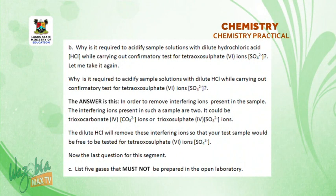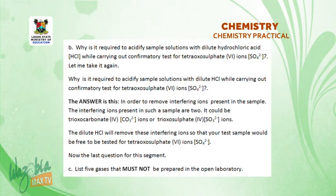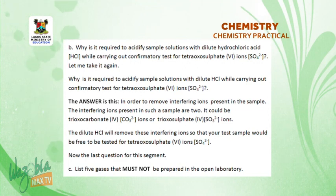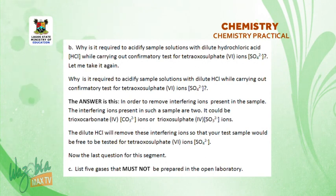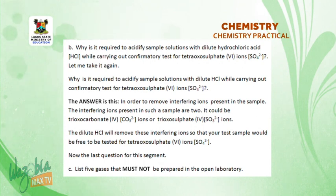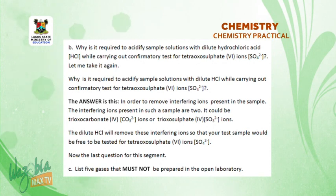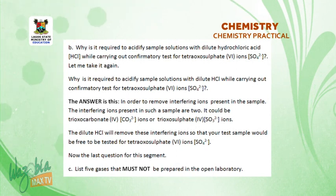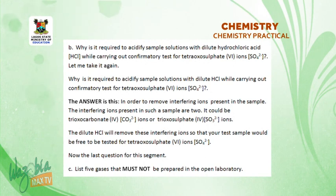Why is it required to acidify sample solutions with dilute hydrochloric acid while carrying out confirmatory tests for tetraoxosulfate(VI) ions? The answer is: in order to remove interfering ions present in the sample. The interfering ions present in such a sample could be trioxocarbonate(IV) ions or trioxosulfate(IV) ions. The dilute HCl will remove these interfering ions so that your test sample will be free to be tested for tetraoxosulfate(VI) ions.